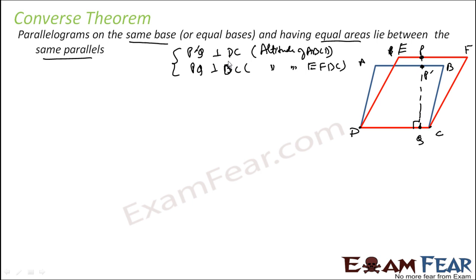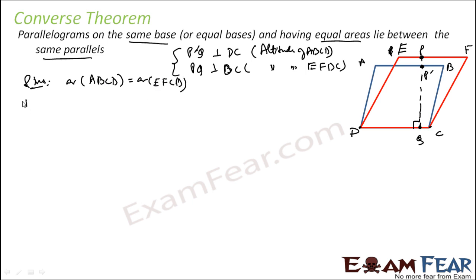So we have to prove the following. Given that they are on the same base by construction and they have the same area. Given that area of ABCD is given. What we have to do? We have to prove that they are on the same parallel — that is, A, P', A, B, E, F should come on the same line.